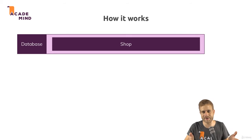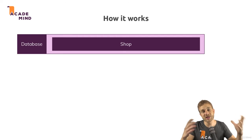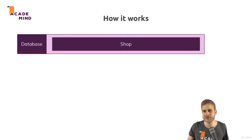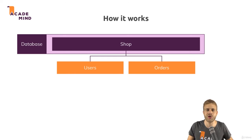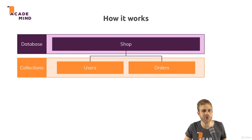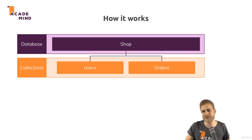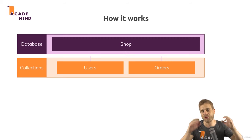So we have a shop database. In the MySQL world, we also have databases, and in such a database we would have tables. In MongoDB, we have so-called collections. So in our shop, we might have a users and an orders collection, and probably also a products collection. You can have multiple databases and multiple collections per database.